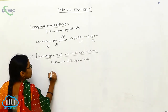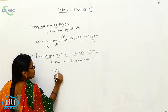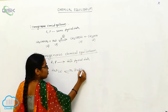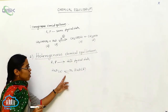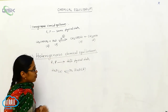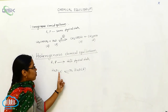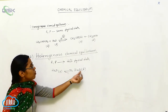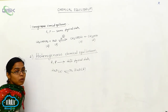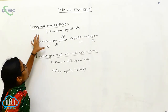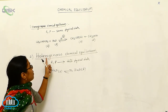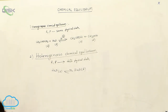Example for heterogeneous chemical equilibrium: water present in the solid state and water present in the liquid state, both in equilibrium. The two physical states are different, so this is called heterogeneous chemical equilibrium. Based on physical state, chemical equilibrium is classified into two types: homogeneous and heterogeneous chemical equilibrium.